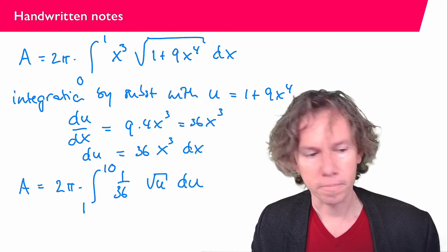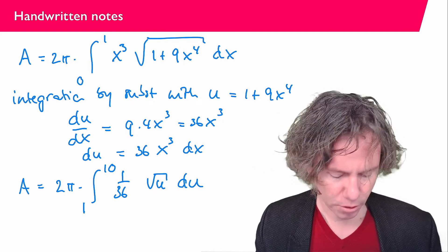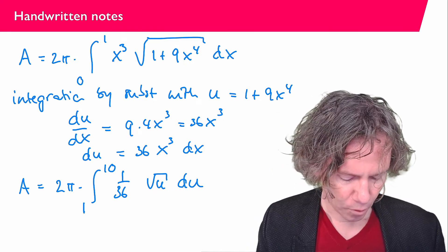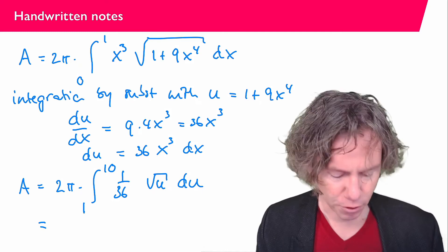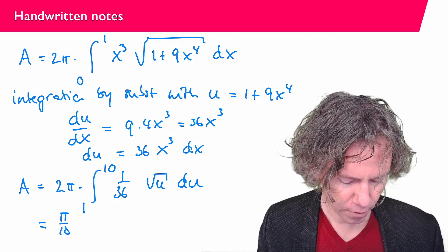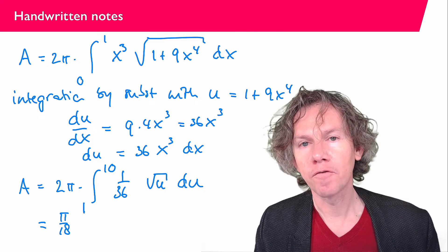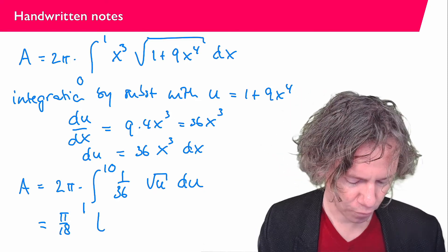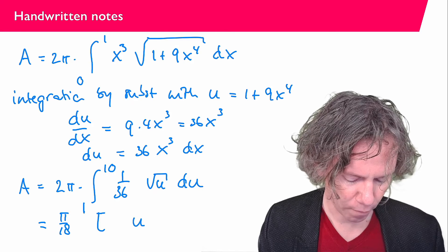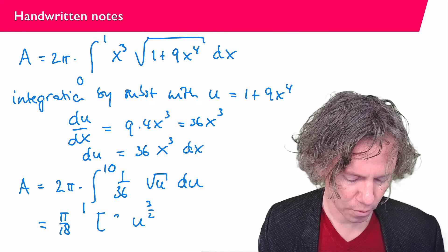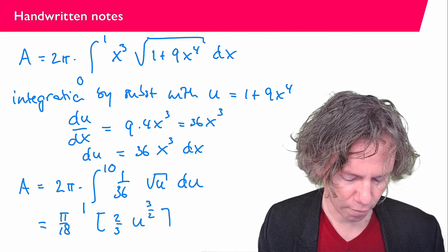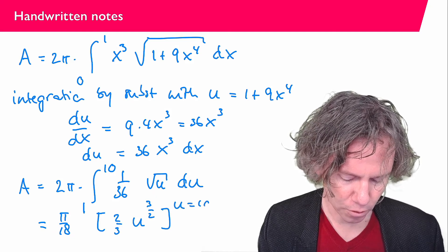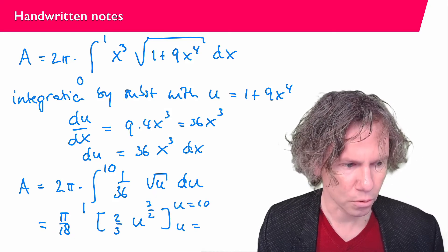And then we are almost done. Because we have 2π over 36, that is the same as π over 18. And then I have to find an antiderivative of the square root of u, which is of course u to the power 3/2. And I have to put a 2 over 3 in front of that. And then in between u equals 10 and u equals 1.